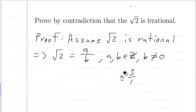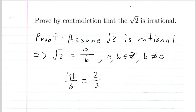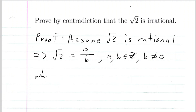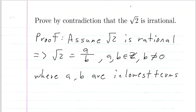With rational numbers, we can always represent them in their lowest terms. For example, four over six is equivalent to two over three. So not only are we going to assume that the square root of two is a rational number, we're going to assume it's in its lowest term form — where A and B are in lowest terms, meaning their greatest common divisor is one.